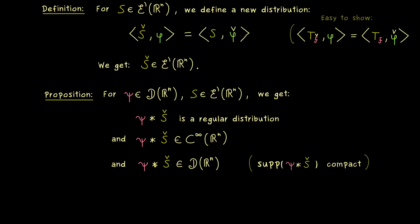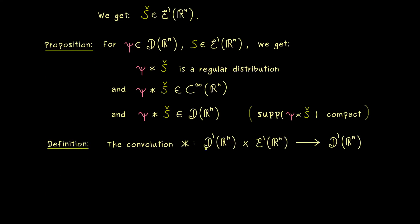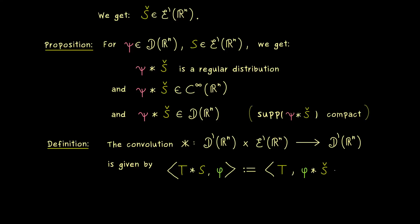This tells us we can define the convolution for two distributions by pushing the star to the right hand side. Here as promised, we have the convolution with two inputs: the first input is a distribution t, and the second is a distribution of compact support s. We define the new distribution t star s via a dual pairing with a test function phi on the right hand side. The idea is to push the star to something we already know — we want the convolution of a test function with a distribution — so we use phi star s.check. This is the new definition of the convolution.